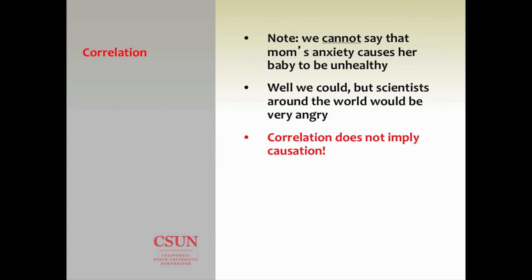Suppose we say mom's anxiety increases, baby's birth weight decreases. We cannot, however, say that mom's anxiety causes the baby to be unhealthy. That would not be well received by the scientific community because we're only concluding based on correlation here. The golden rule — I put it in red print so you can remember this forever: correlation does not imply causation. As you determine the relationship between two variables, you're not determining cause at the same time.